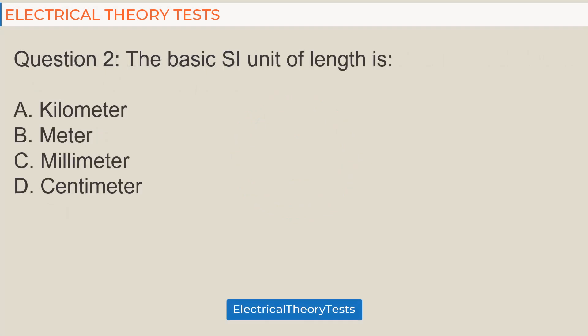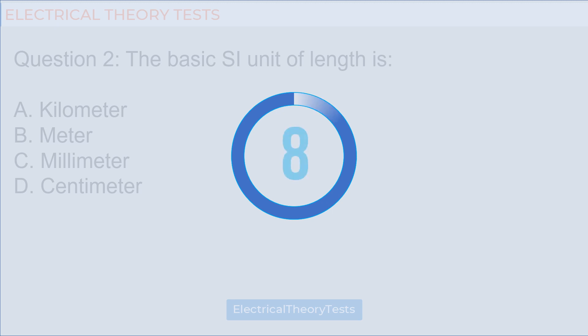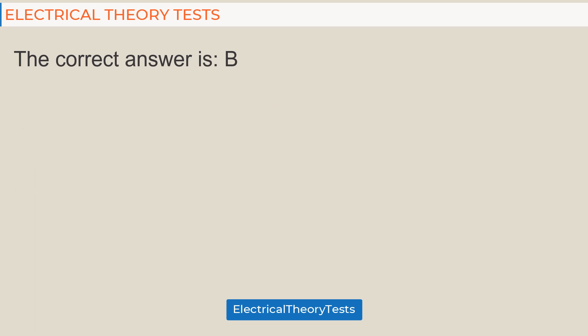Question 2: The basic SI unit of length is: A. kilometer, B. meter, C. millimeter, D. centimeter. The correct answer is B.